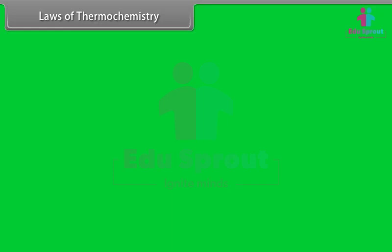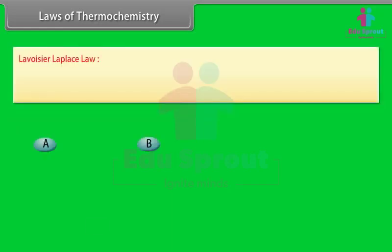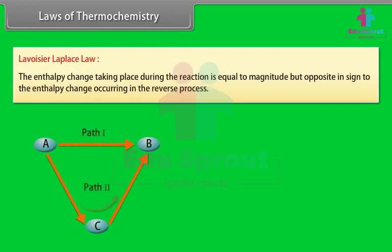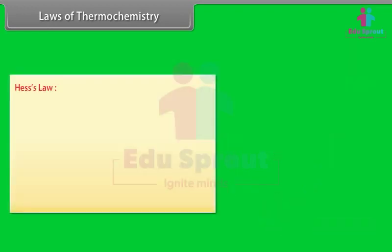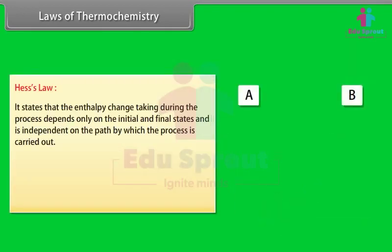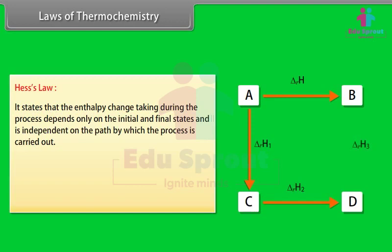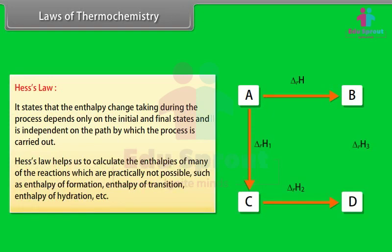Laws of thermochemistry. Lavoisier-Laplace law: the enthalpy change during a reaction is equal in magnitude but opposite in sign to the enthalpy change occurring in the reverse process. Hess's law states that the enthalpy change during a process depends only on the initial and final states and is independent of the path by which the process is carried out. Hess's law helps us calculate the enthalpies of reactions that are practically not possible, such as enthalpy of formation, enthalpy of transition, and enthalpy of hydration.